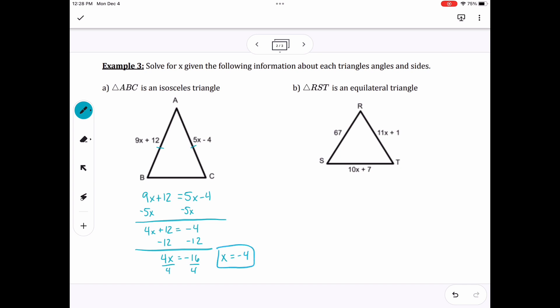On letter B, we have an equilateral triangle. So that means that all three sides are equal to one another. It doesn't matter which ones we set equal to each other, but it would be easiest if we took one of the x sides with the 67, so we only have two steps. So 11x plus 1 equals 67. Subtract the 1. Divide by 11. And that gives me x value of 6.